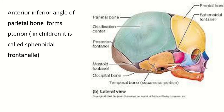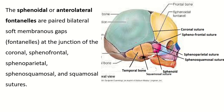Sphenoidal fontanelle: this is the anterior-inferior angle of the parietal bone. In adults this part is known as the pterion, and in children it is known as the sphenoidal fontanelle. The sphenoidal or anterolateral fontanelles are paired bilateral soft membranous gaps at the junction of the coronal suture, sphenofrontal suture, sphenoparietal suture, sphenosquamosal suture, and squamosal suture.